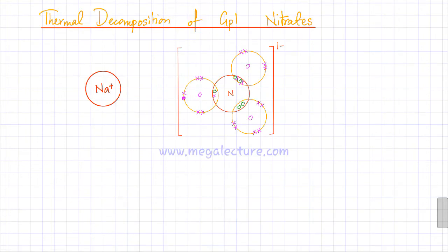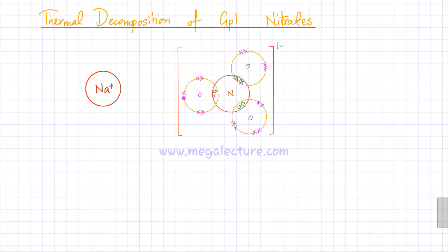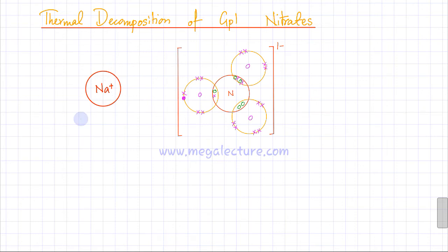Now we're going to discuss the thermal decomposition of group 1 nitrates, which is slightly different from the decomposition of other nitrates. I've drawn a group 1 nitrate — sodium nitrate — where you have a sodium ion and a nitrate ion, NO₃⁻. Group 1 ions only have a charge of +1, and they are also the largest ions in their period, so their charge density is lower.